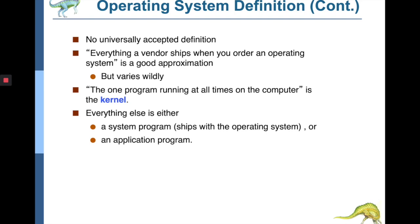There is no universally accepted definition of an operating system — everything that a vendor ships can be considered an operating system. But we should know that there is one program that runs all the time when the computer is on, and that is called the kernel. The kernel is the heart of the operating system, with functions and code that make basic computer operations work — managing the running of the computer system.